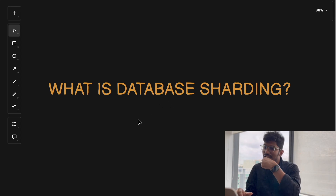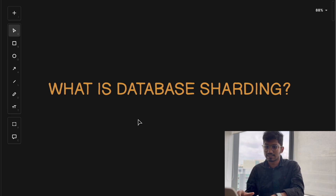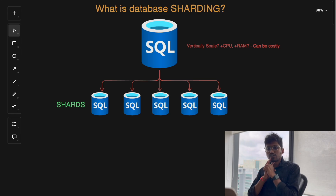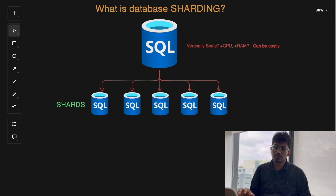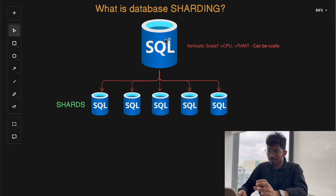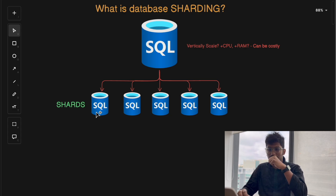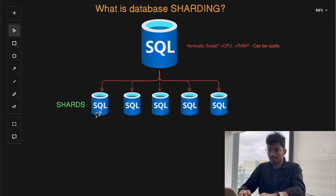Before we get too technical, let's understand what sharding really means. In the simplest form, sharding is a database architecture pattern that splits your large database into smaller and more manageable pieces. We call these smaller pieces shards. Each shard is essentially a separate database, and collectively they handle the full load of your entire database.